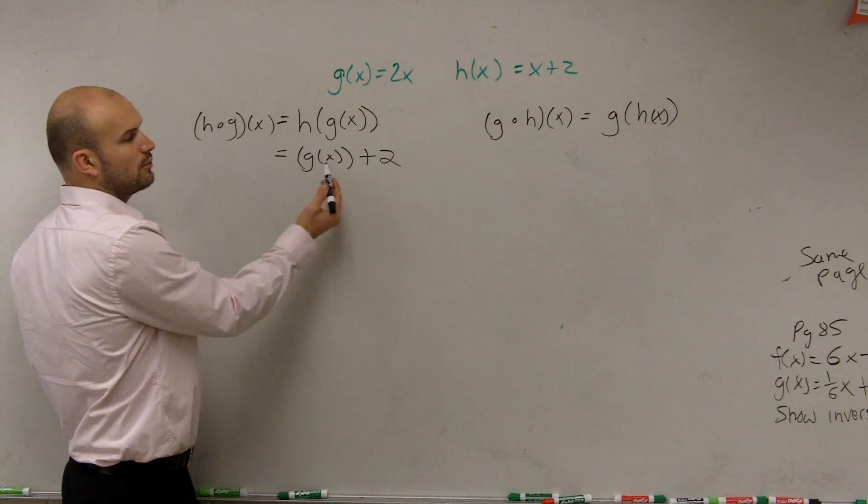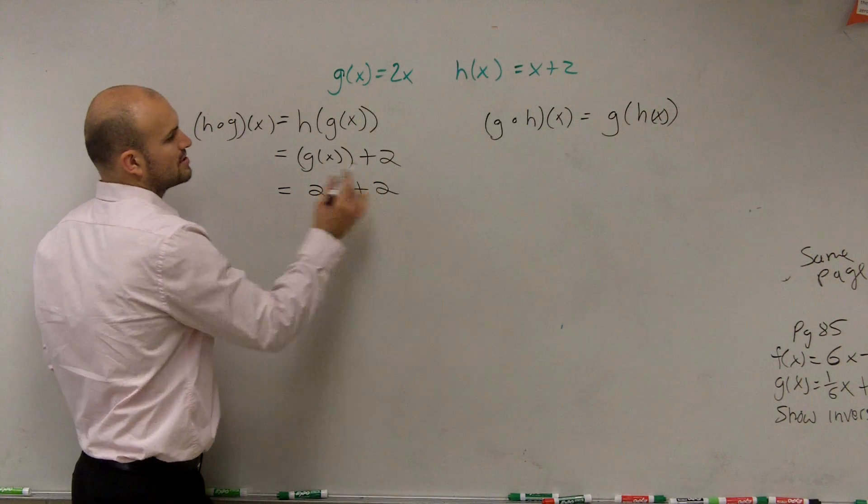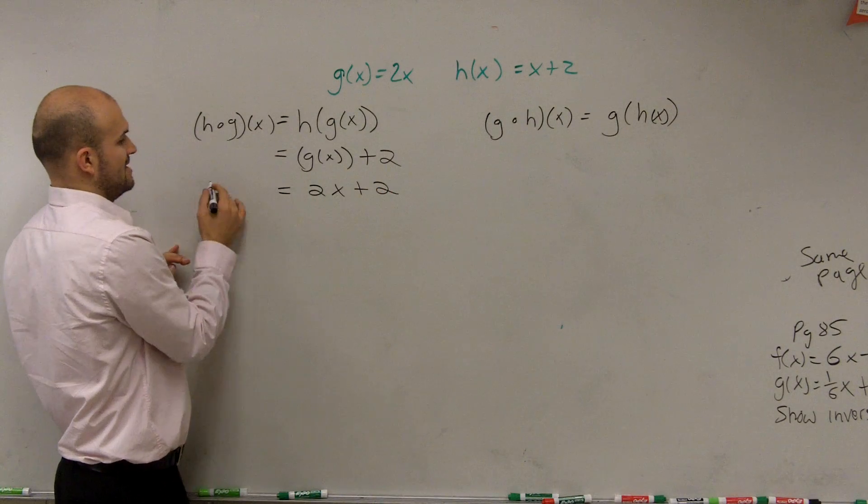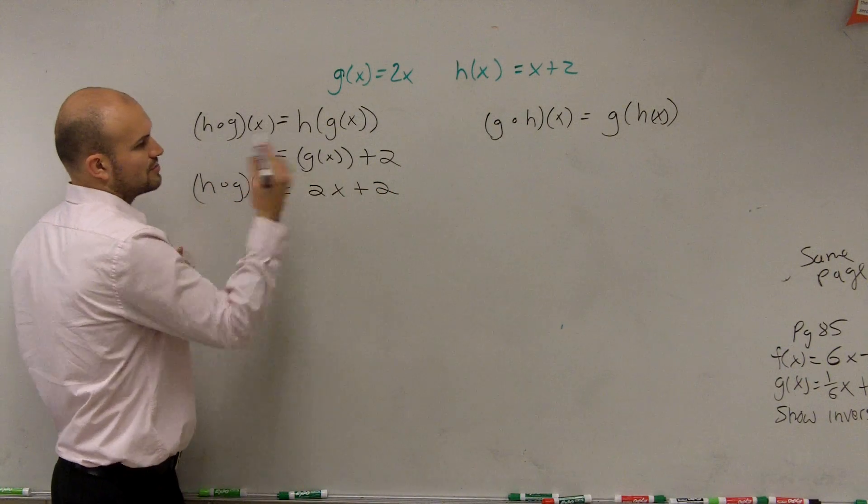So now we need to evaluate what's the g of x function: 2x plus 2. And we can't simplify that anymore. So h of g of x equals 2x plus 2.